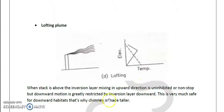Mixing height in the upward direction is uninhibited or non-stop, but downward motion is greatly restricted by the inversion layer. Because there will be inversion layer, so pollutant cannot move down and the stack is above the inversion layer.